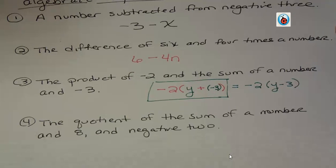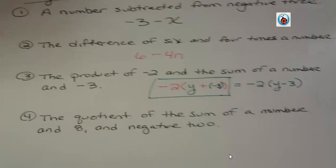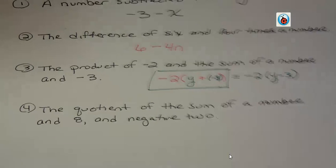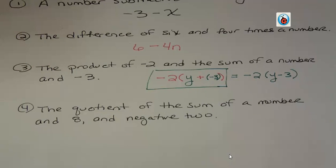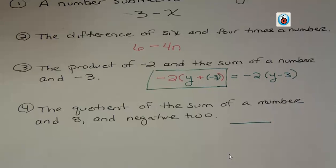The quotient of the sum of a number and eight and negative two. Now, in this case, we're talking about overall, the first operation is a quotient. So that means I want to write it like this. That's my division symbol, fraction bar in this case.